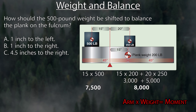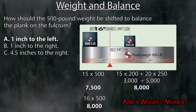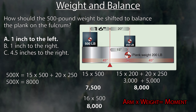Intuitively, you can tell the 500-pound weight has to be moved further to the left — a bigger arm times a weight gives a bigger moment. Move it one inch to the left to 16 inches: 16 times 500 equals 8,000. Another way is to set it up as an equation: 500x = (15×200) + (20×250), giving 500x = 8,000, so x = 16. Your arm is 16 on the left side.